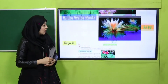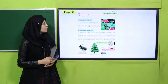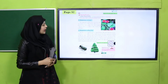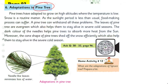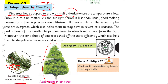Now let's move to page 92 again and study the adaptations of pine trees. This is a pine tree with scale-like, needle-shaped leaves. These needle-like leaves reduce the loss of water. Pine trees have adapted to grow on high altitudes — in hilly areas — where the temperature is low.